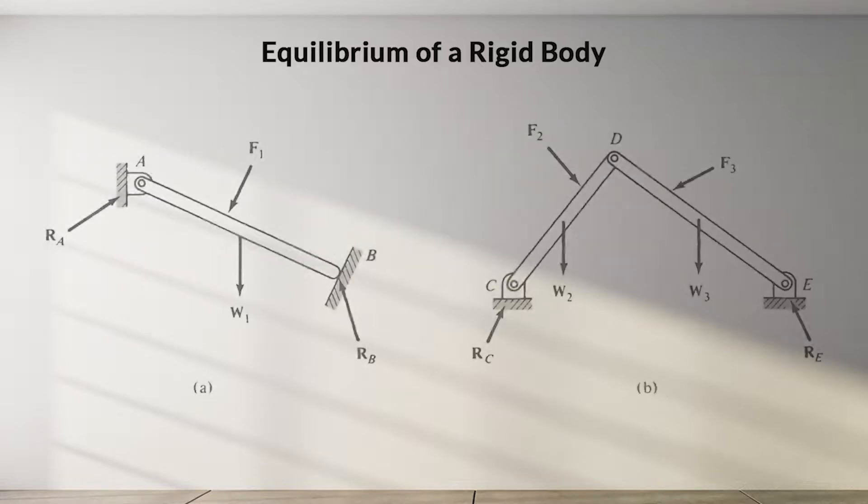The rigid body, such as a structure or machine, may consist of a single member, like member AB, as you can see in figure A. Or several members, such as CD and DE, joined together in figure B form a single system.